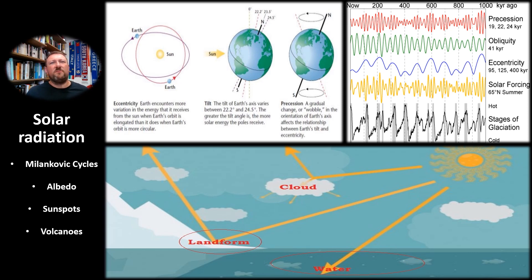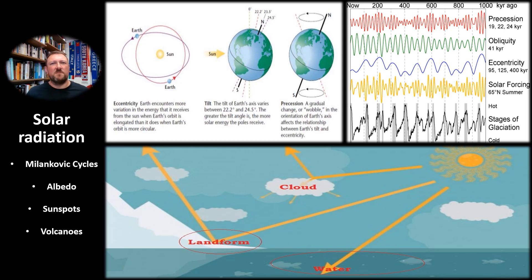One key influence are the planetary orbital variations known as Milankovitch cycles, shown here in the top graphics, which impact the amount of solar radiation that hits the Earth from the sun. Another influence on temperature variations over time is albedo, illustrated here in the bottom graphic.